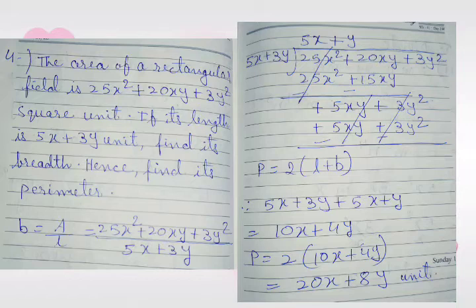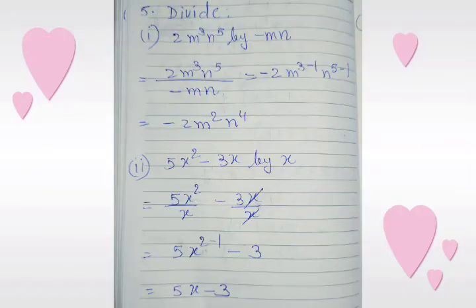Next, question number 5 — divide. Sub-part 1: 2m cubed n to the power 5 divided by minus mn. We write it out: minus 2m to the power 3 minus 1, n to the power 5 minus 1. The answer is minus 2m squared n to the power 4.